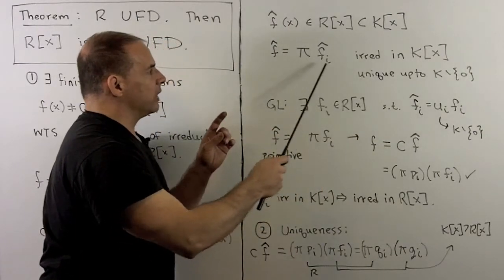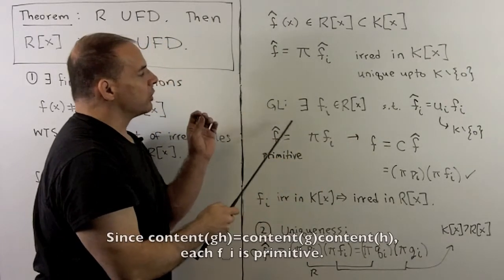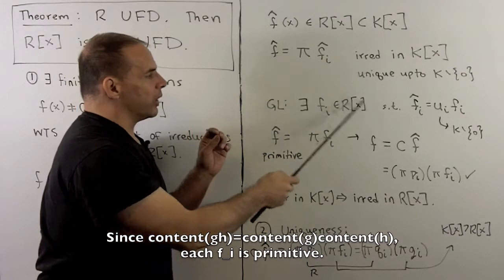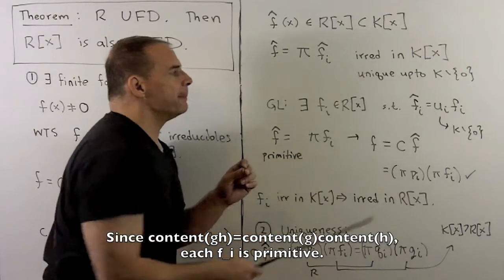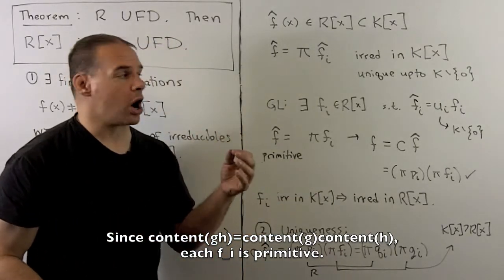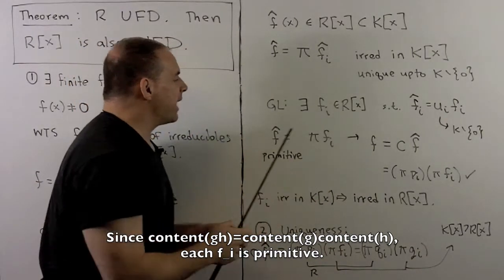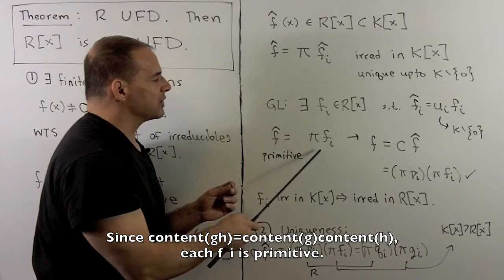Now, by Gauss's lemma, we could change each of these. So there's going to exist fᵢ's in R adjoin x, such that f̂ᵢ equals uᵢfᵢ, uᵢ is an element of K*.